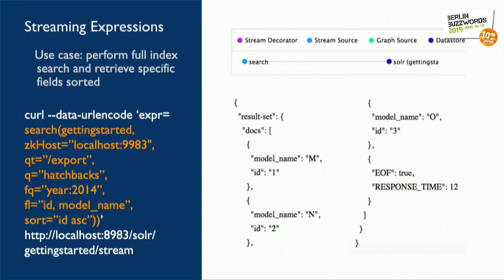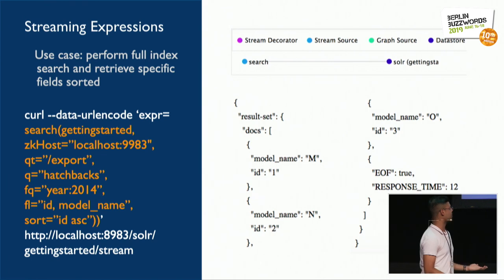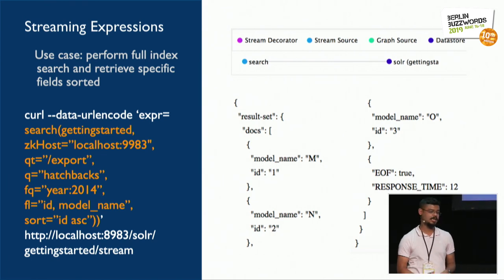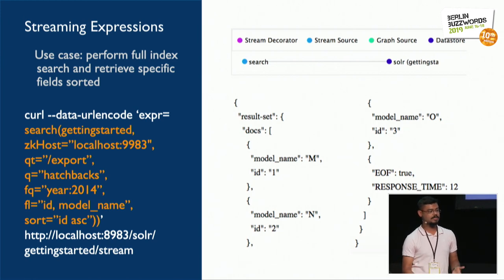We want our results in ascending order of ID. Looking at the result on the right-hand side, we have the graphical representation of the execution — pulling data from the 'getting started' collection and performing a search. The result set is in the form of tuples: IDs 1, 2, 3 in ascending order with model names M and O. The last tuple is EOF with its response time of 12 milliseconds, which is the execution time against the Solr servers.